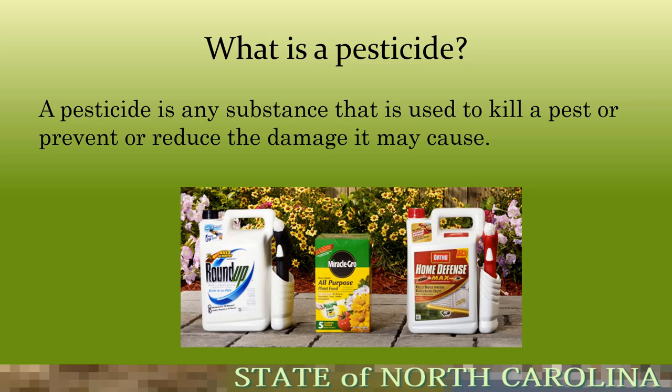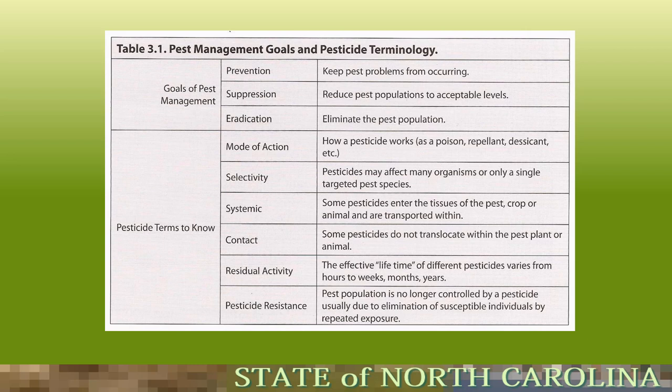A pesticide is any substance used to kill a pest or prevent or reduce the damage it may cause. Common examples available at big box stores include Roundup, a non-selective herbicide that kills pretty much anything growing, Miracle-Gro plant food, and Ortho Home Defense Max insecticide. You do not need a pesticide license to purchase these. You would only need a license to purchase a restricted-use pesticide, or RUP, which you'd find at landscape supply houses, not big box stores.